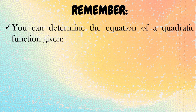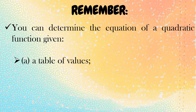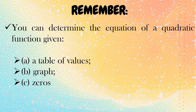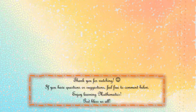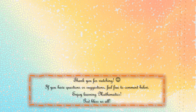To summarize: you can determine the equation of a quadratic function given first a table of values — find five equations and solve for a, b, and c; second is by graph; and last is using zeros. I hope you learned from this video tutorial. Thank you for watching. If you have questions or suggestions, feel free to comment below. Enjoy learning mathematics. God bless us all!